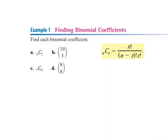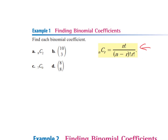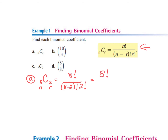Questions would look like this. For letter A, it says 8C2. So in my formula, N is 8 and R is 2. In my numerator I have 8 factorial. Remember, 8 factorial means 8 times 7 times 6 and so on. On the bottom I have N minus R factorial, so it's 8 minus 2 factorial, and then 2 factorial. Showing work: 8 factorial over 6 factorial times 2 factorial.